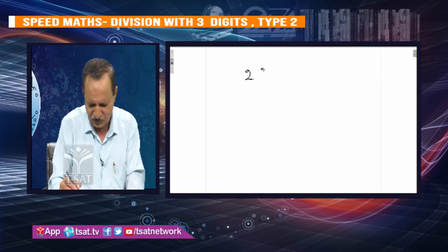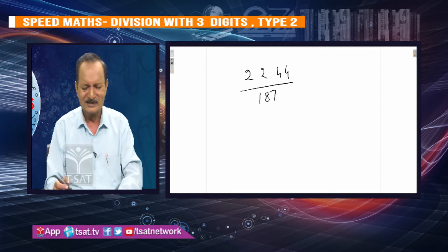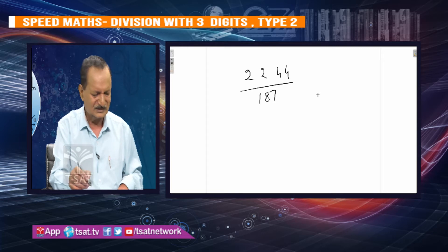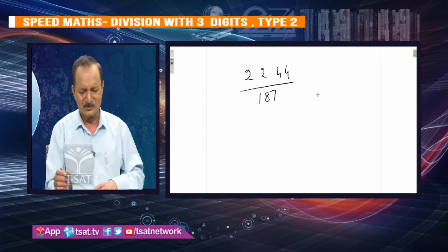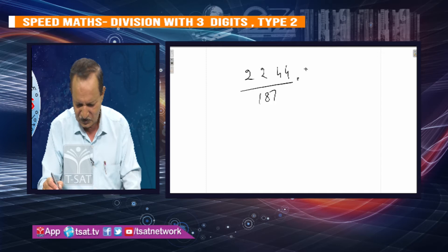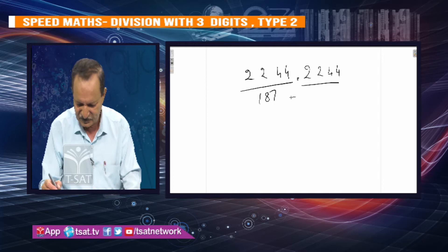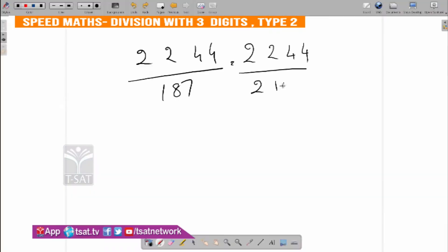This is 2244 divided by 187. For 187: 1 AC then 1 less, 2 AC then 1 less. So 2244 by 187 becomes 200 minus 13. Then 80 minus — you can convert. 200 minus 13, this is minus 1.